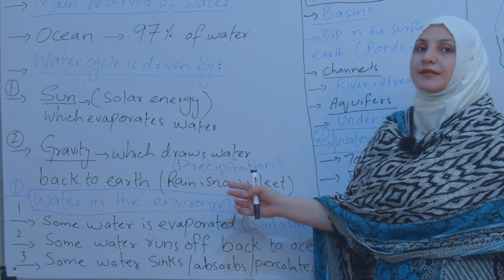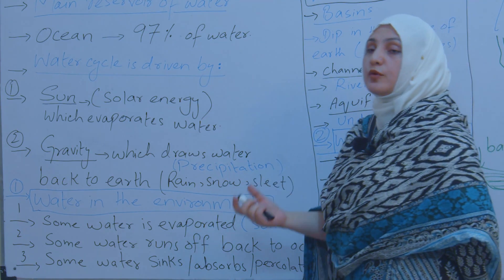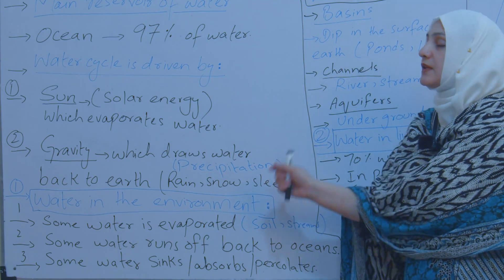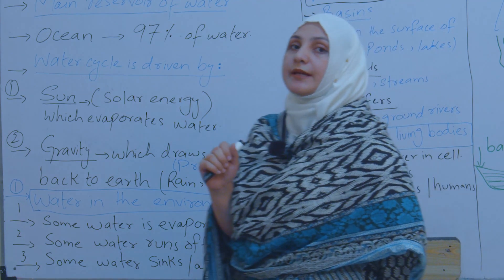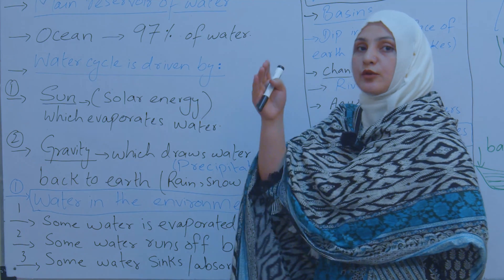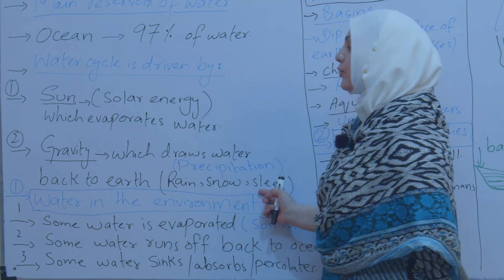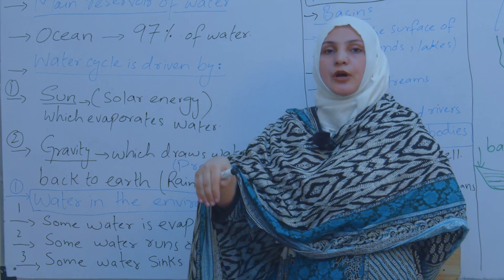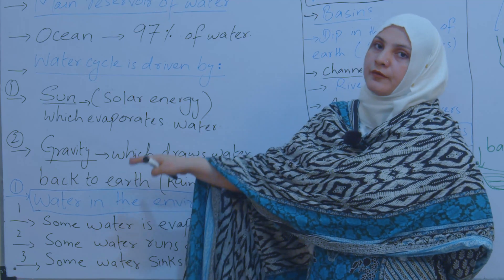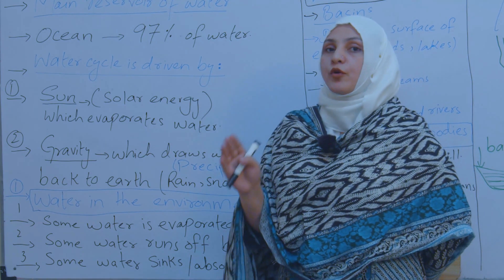Solar energy basically evaporates the water. The combined terminology we use is called precipitation. Precipitation is the biological term we use to represent rain, snow, and sleet. Sleet is a new terminology introduced here — it refers to snow coming down along with rain, which we can also call hail. Precipitation moves from upward to downward direction — from atmosphere to earth's surface — and this downward movement is controlled by the force of gravity. So sun and gravity are the two main factors responsible for the maintenance of the water cycle.